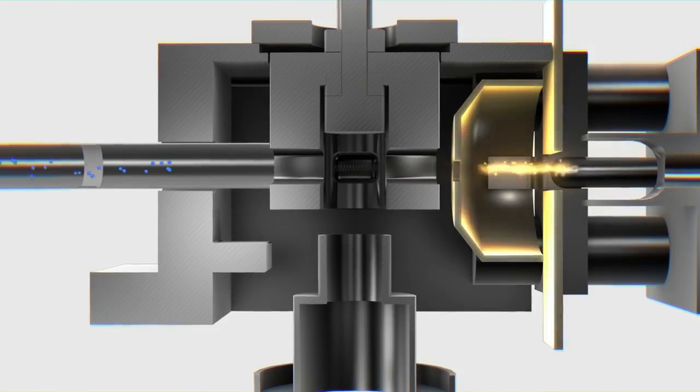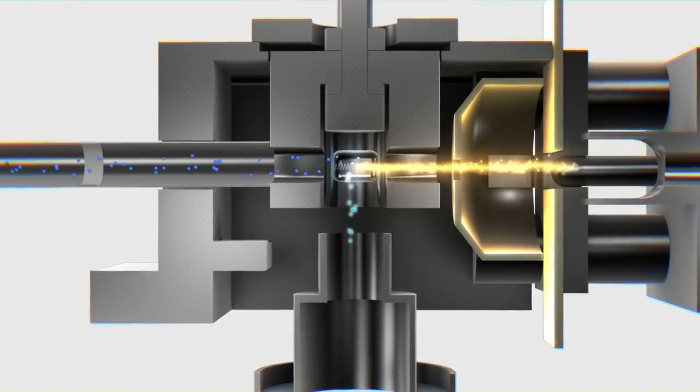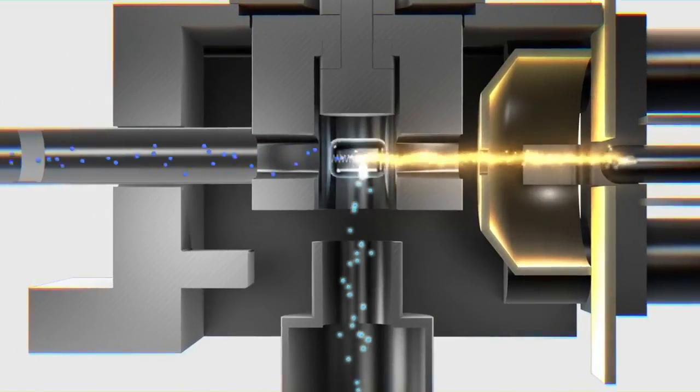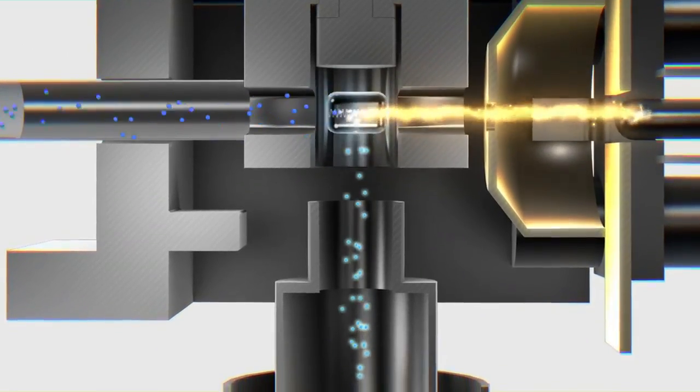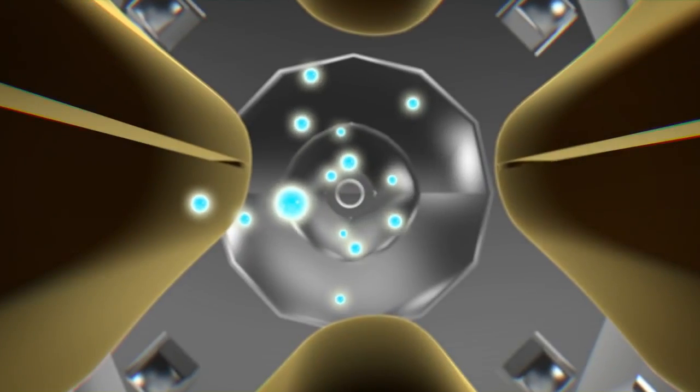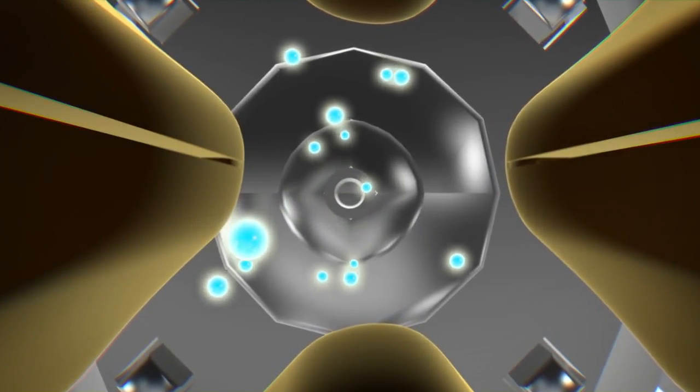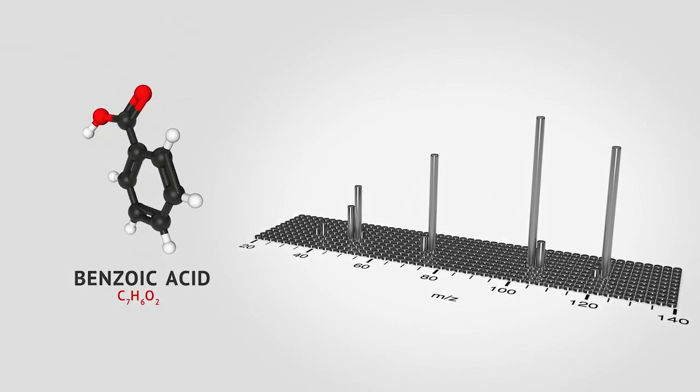Next, a beam of electrons ionizes the molecules, giving them a positive electric charge and deflecting them towards the linear ion trap. The ions are caught by a fluctuating electric field and sent to a detector to determine the chemical makeup.